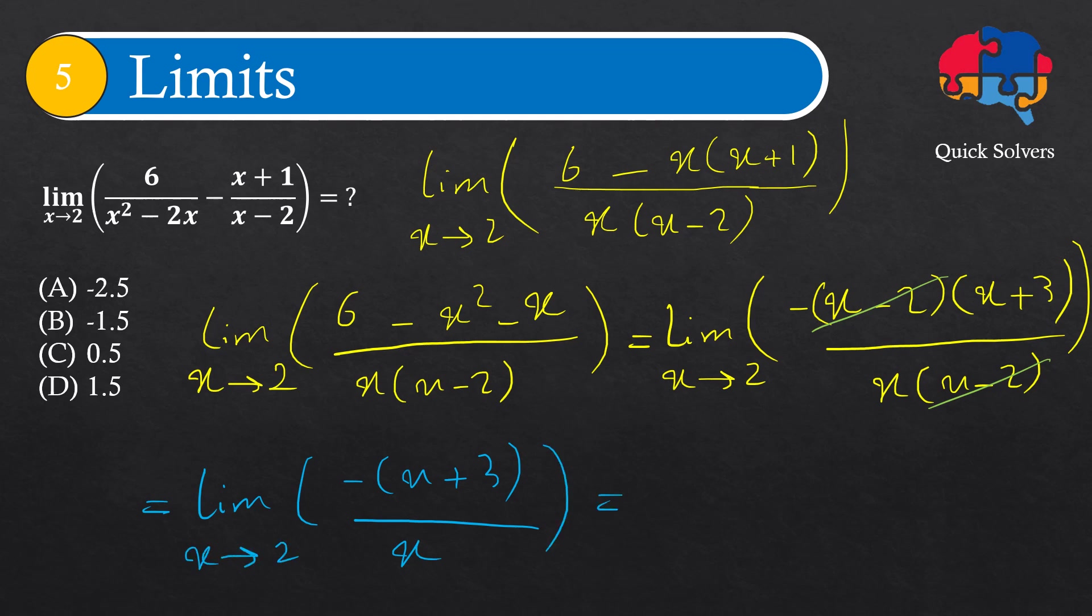And this is very simple. I just can simply replace x by 2. Then I would have minus 2 plus 3 over 2, which is minus 5 over 2. And this equals minus 2.5. That is telling us that this is the right answer.